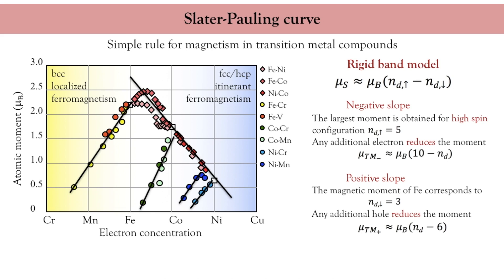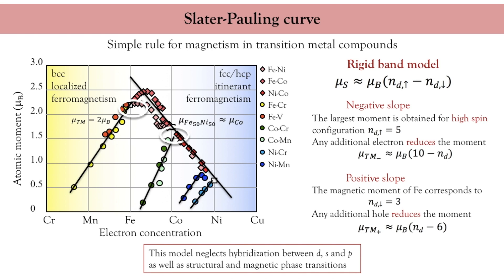Now this estimate is of course quite rough. It gives some good rule of thumbs. For instance, the magnetic moment of an alloy with 50% iron and 50% nickel is indeed equal to that of a pure cobalt. This works well, but if one looks at the magnetic moment of bulk iron, it is clearly underestimated. In addition, you can notice in several places substantial deviations from the linear behavior deduced from the rigid band model. These discrepancies are attributed to the fact that we neglected hybridization between the d, s and p electrons, as well as structural and magnetic phase transitions.